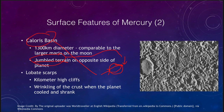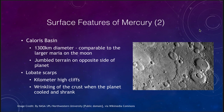Another feature unique to Mercury is what we call a lobate scarp. Looking at a surface image, you can see the scarp winding its way through a couple of different craters. It doesn't look very large, but these are actually cliffs that are kilometers high — not just little bulges, but actual cliff faces that if you were trying to climb one, you might have a mile or more to climb.